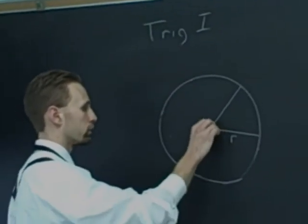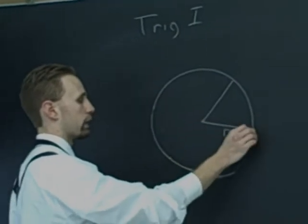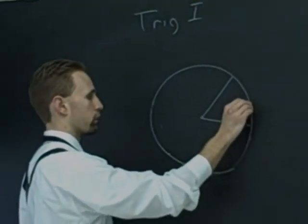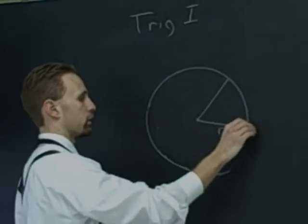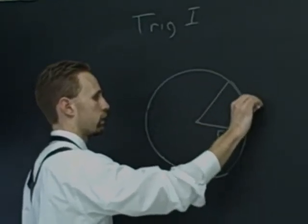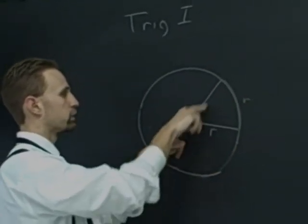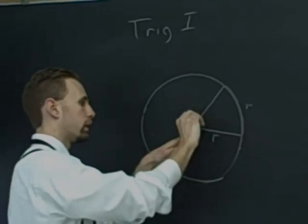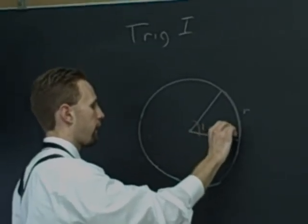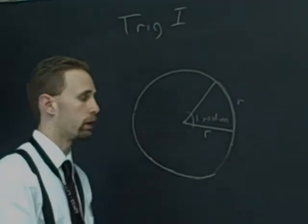You take any circle, start at the center, the radius is r. If we go along the circumference a distance of r, radius length here, the angle that subtends that arc is one radian. That's the definition of what a radian is.